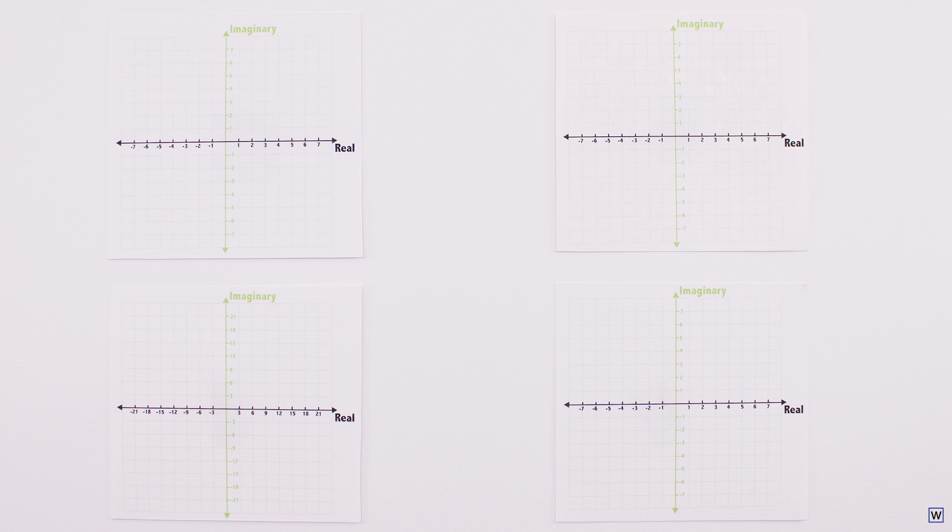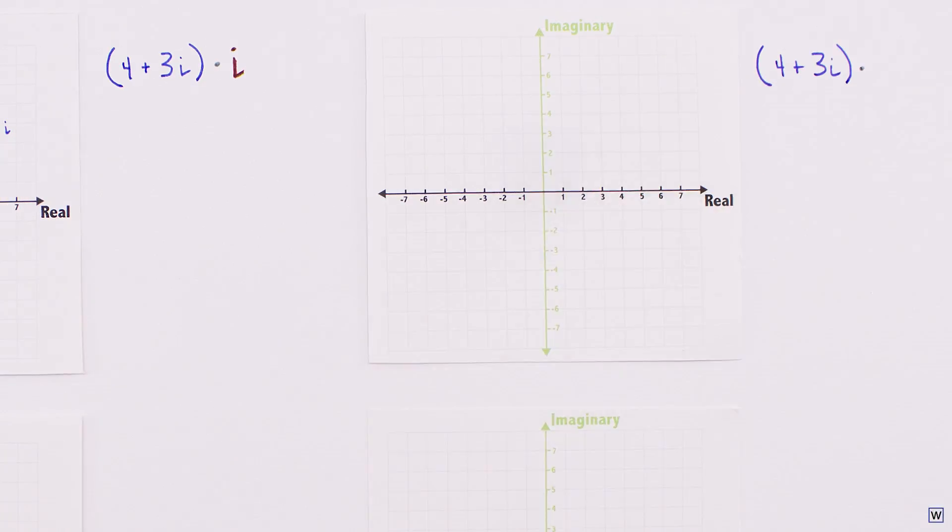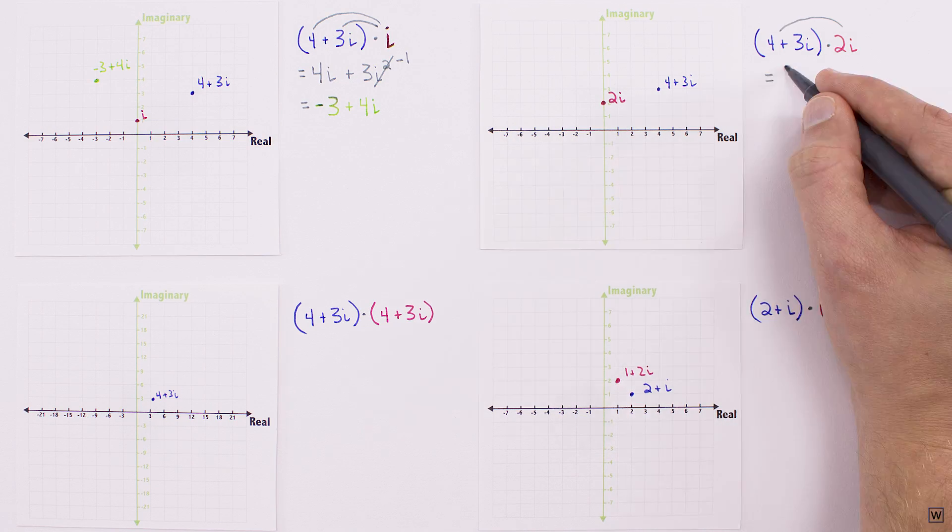To get to the bottom of this, we'll use the four examples we mentioned last time. For each example, we'll plot the two numbers we're multiplying together. We'll also compute the result algebraically and add it to each plot.